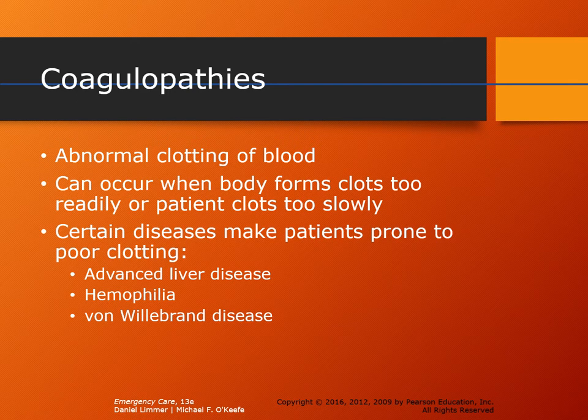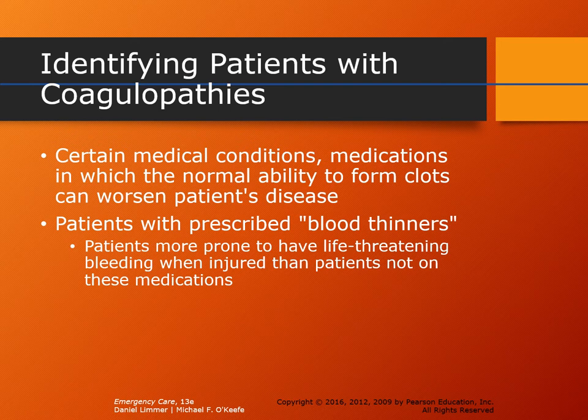Diseases like liver disease, hemophilia, and von Willebrand disease make patients much more susceptible to high-volume blood loss when they sustain a cut. The severity of the clotting inability will determine how much blood they lose, how quickly, and how difficult it will be to establish effective bleeding control in EMS. Patients with these coagulopathies need special attention.